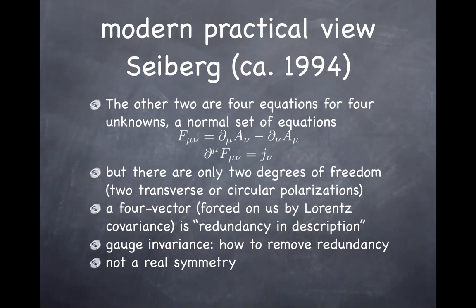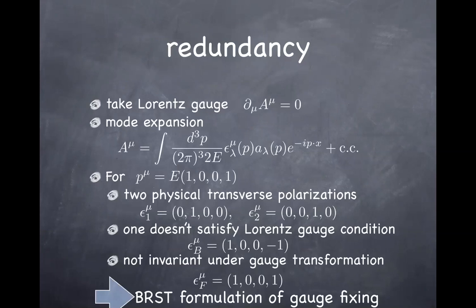Student: In what sense are there two degrees of freedom? I would say three because gauge symmetry removes one. Instructor: That's the next slide. This is how it works in the Lorentz gauge — how you remove the extra two degrees of freedom looks different depending on which gauge you use. We'll come back and talk about this more when we get to quantization of the non-Abelian gauge field using the BRST formalism. But I'm just giving a rough idea of how things are supposed to work.